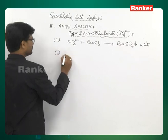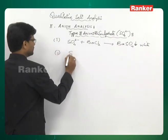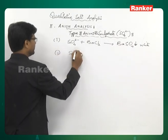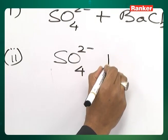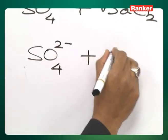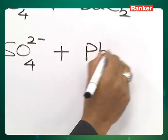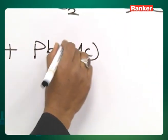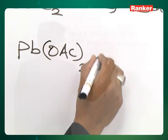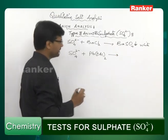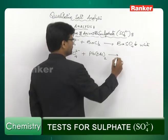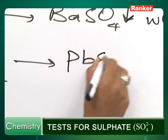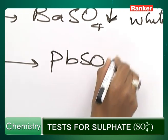Number 2: sulphate plus lead acetate. Here also you get a white precipitate, this time due to formation of lead sulphate (PbSO₄).